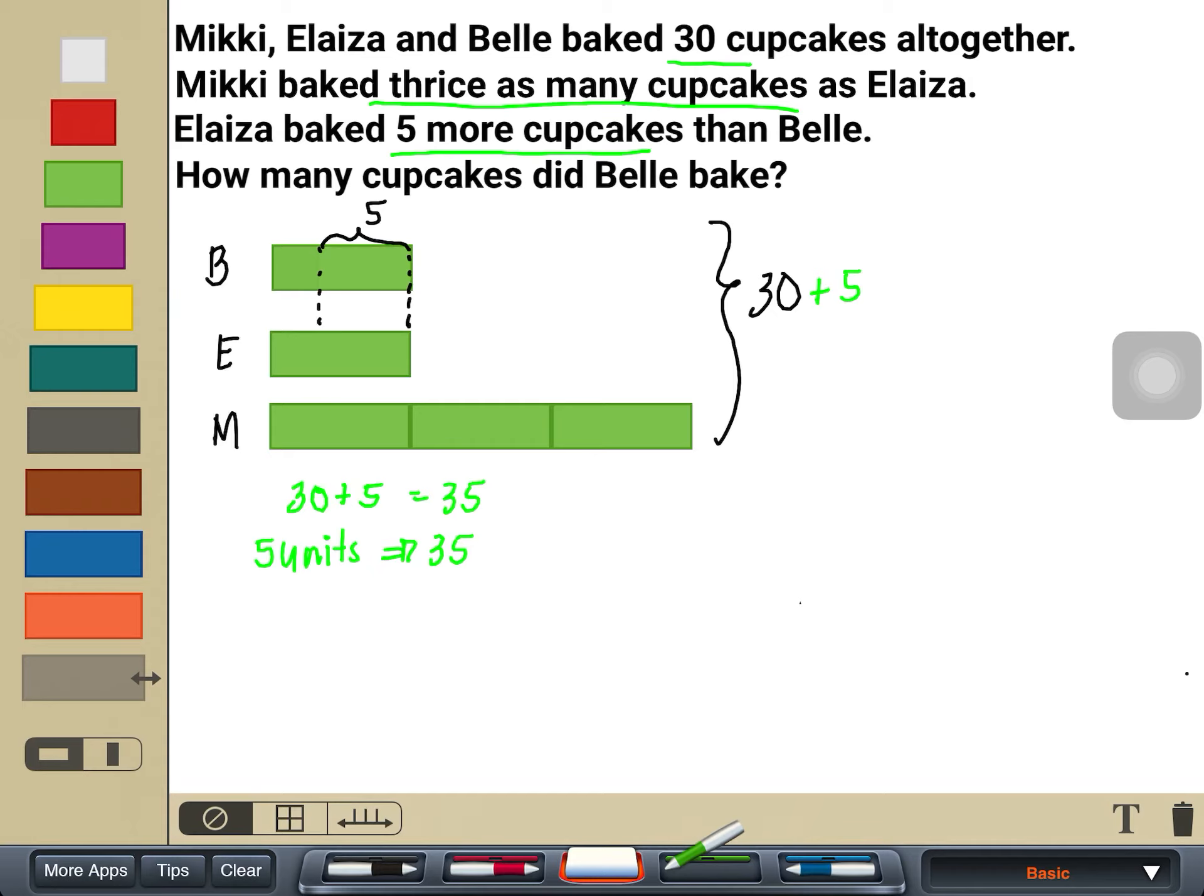I want to find 1 unit first. And afterwards, I can find how much Belle baked. So 1 unit would now be equal to 35 divided by 5, which is 7. So each green bar here is equal to 7.